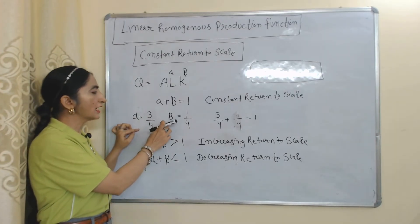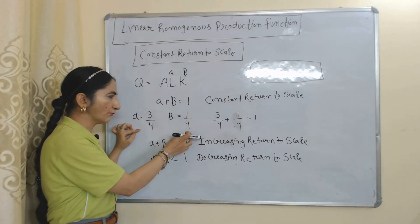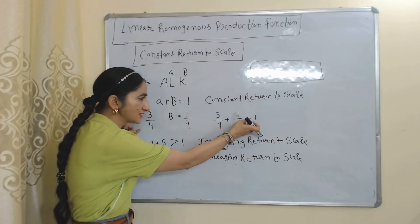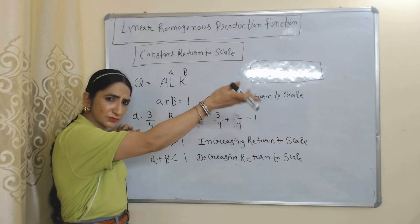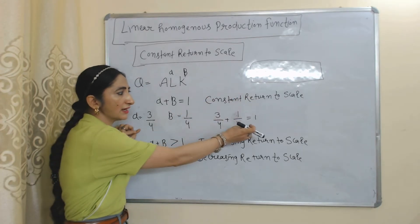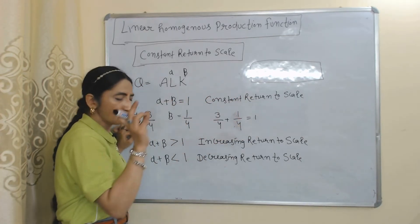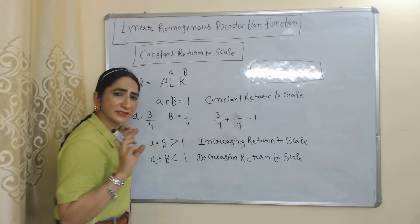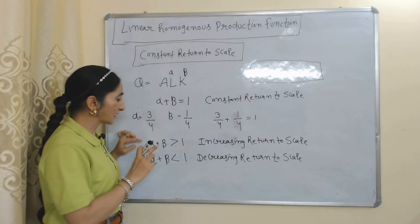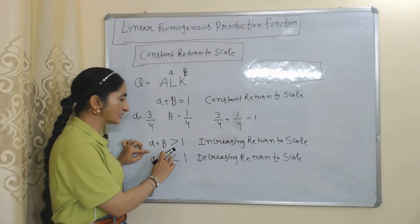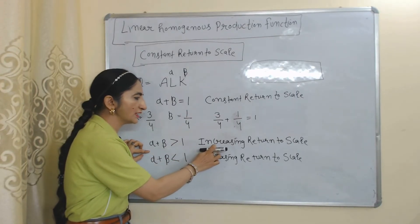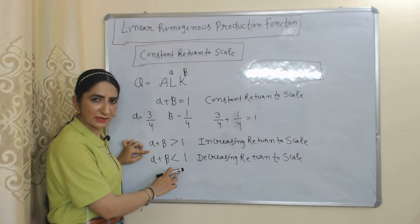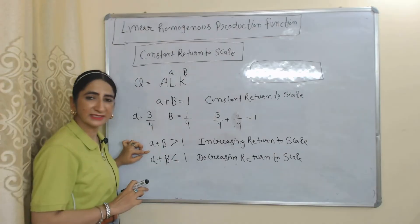For example, suppose alpha equals 3/4 and beta equals 1/4. When we add these values, they equal 1, meaning the change in output is the same as the change in input — constant return to scale. If alpha plus beta is greater than 1, we are receiving increasing return to scale. If alpha plus beta is less than 1, we are receiving decreasing return to scale.